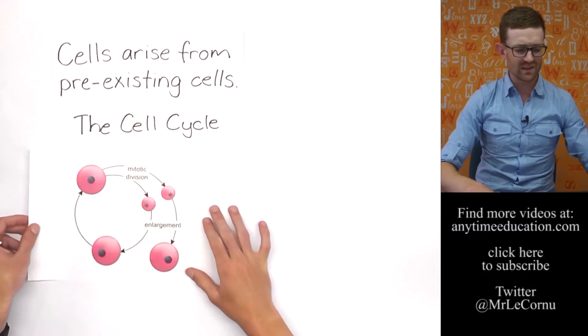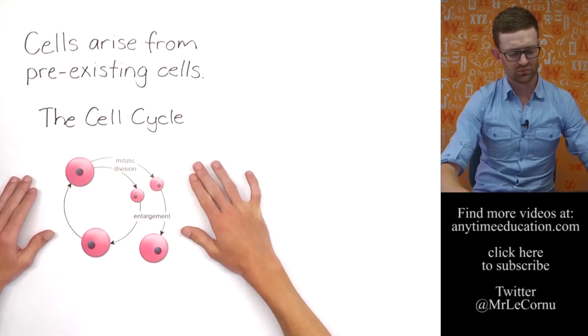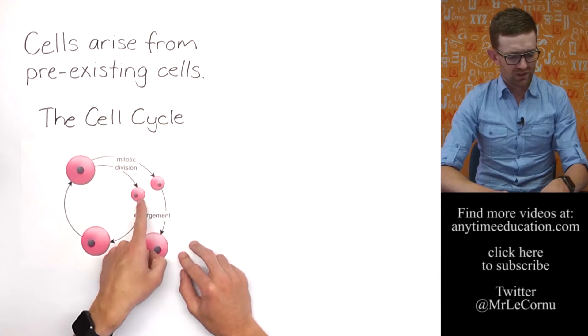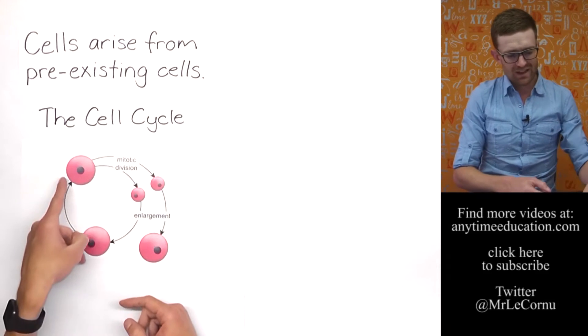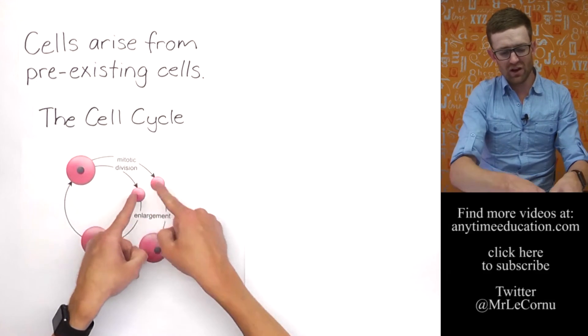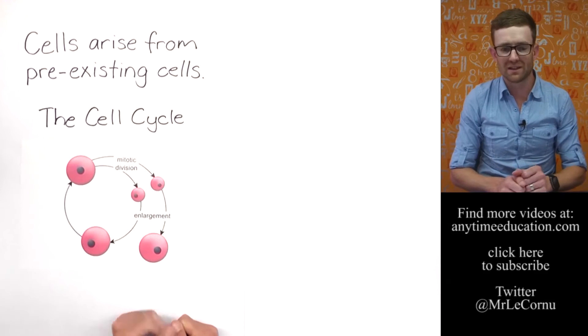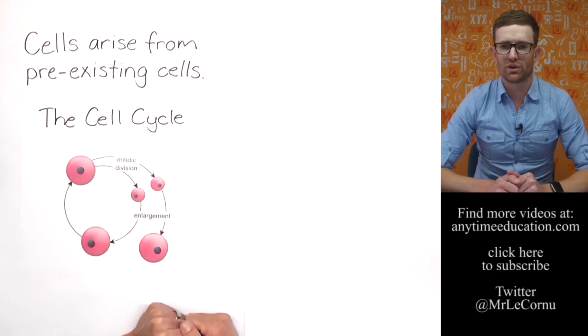We've got a really simple diagram here of a cell cycle. So in a cell cycle, we've got a new cell that goes through a stage of growing or enlargement and then eventually it divides into two new cells. And then they go through a stage of growing and enlargement and then divide. And that cycle occurs over and over again.